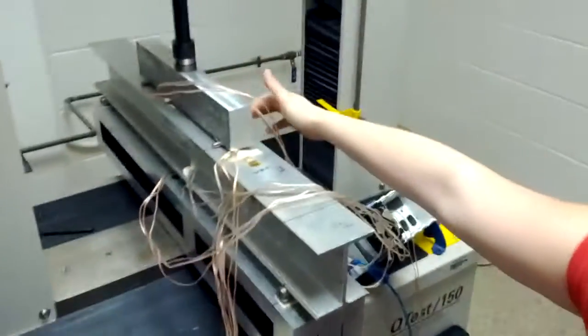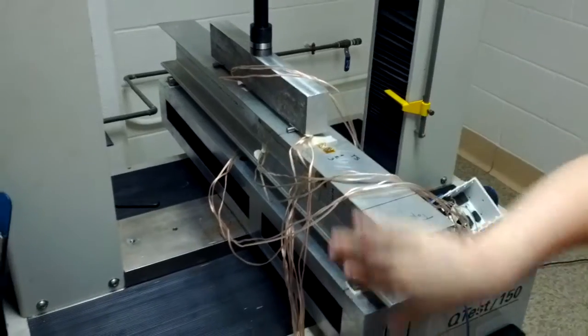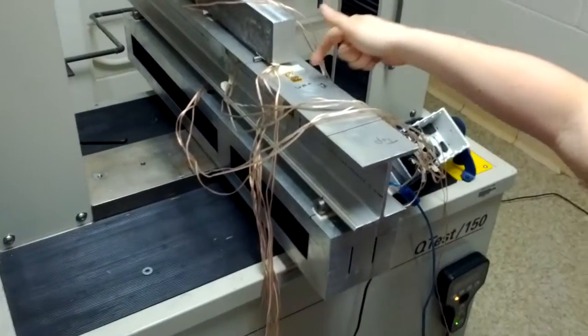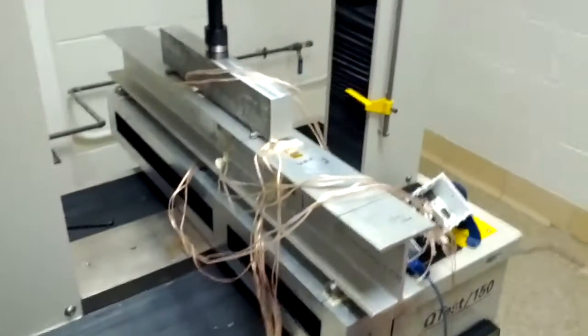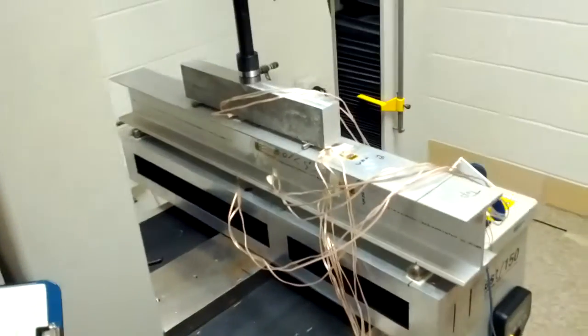We're going to get pure bending between these top two rollers, and then we're going to get bending with shear between these rollers here. That's why we've put our rosettes in those two locations, so we're able to sense the difference in strength of those two different conditions.